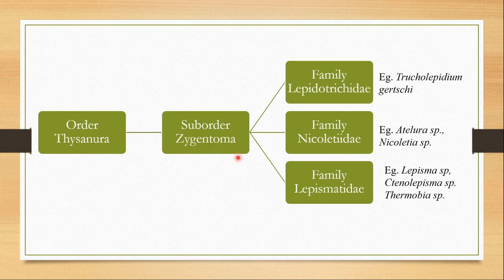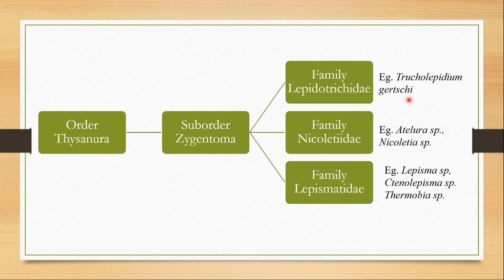Order Zygentoma includes five families, three of which are more well known: Family Lepidotrichidae, Family Nicolatidae, and Family Lepismatidae. Family Lepidotrichidae includes two species — one of them is extinct, and the other, Tricholepidium zedatchi, is found in the US.